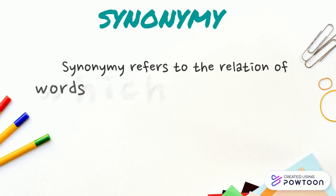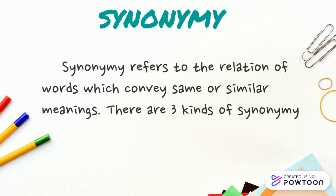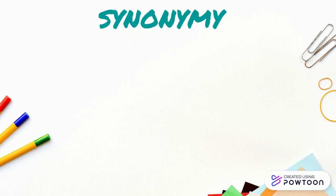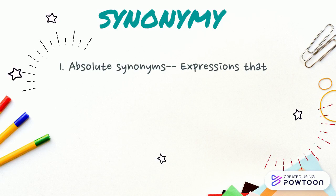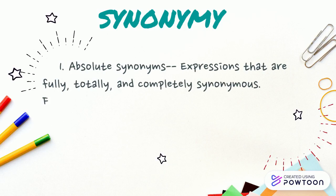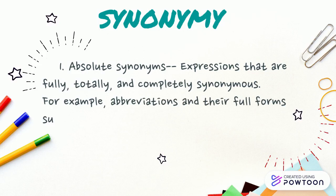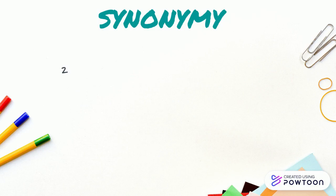Synonymy refers to the relation of words which convey the same or similar meanings. There are three kinds of synonymy. First, absolute synonyms: expressions that are fully, totally, and completely synonymous. For example, abbreviations and their full forms, such as CD for compact disc and NP for noun phrase.